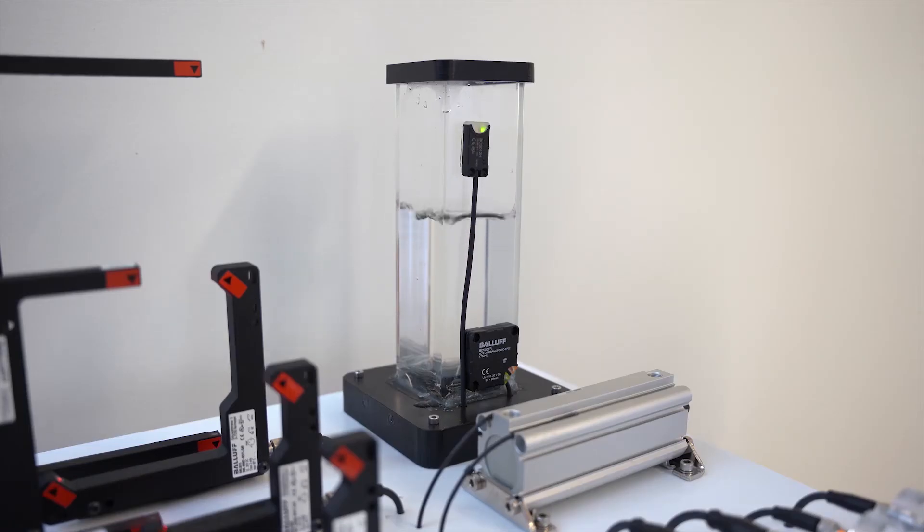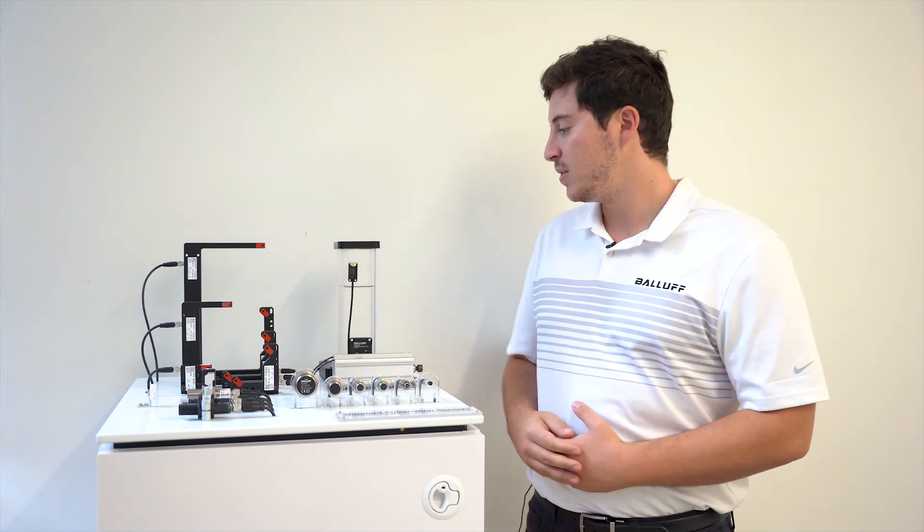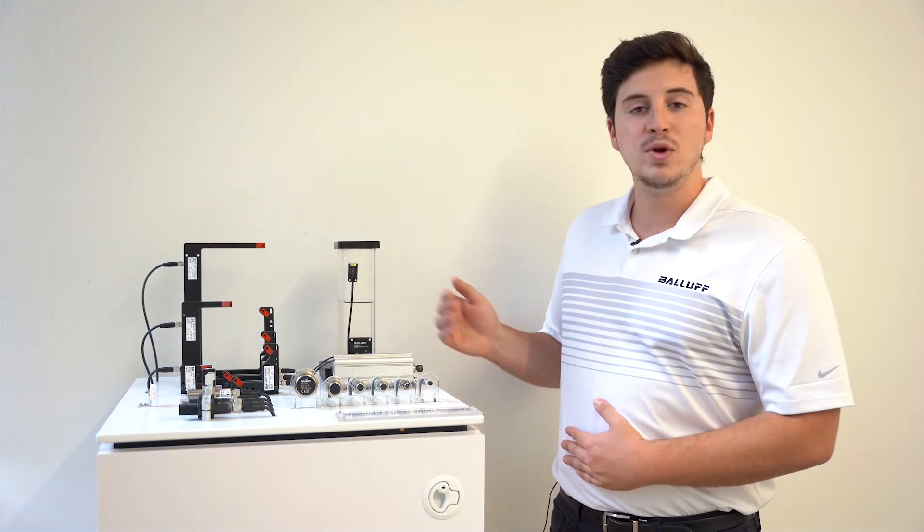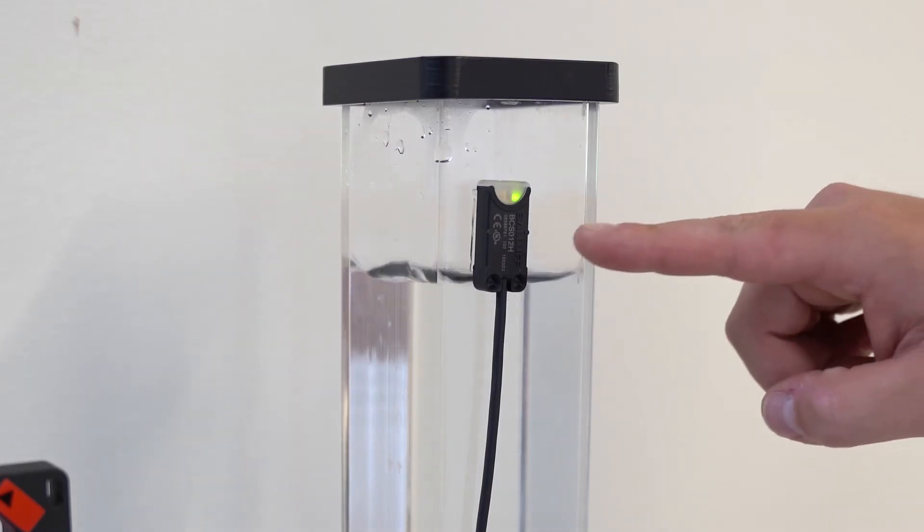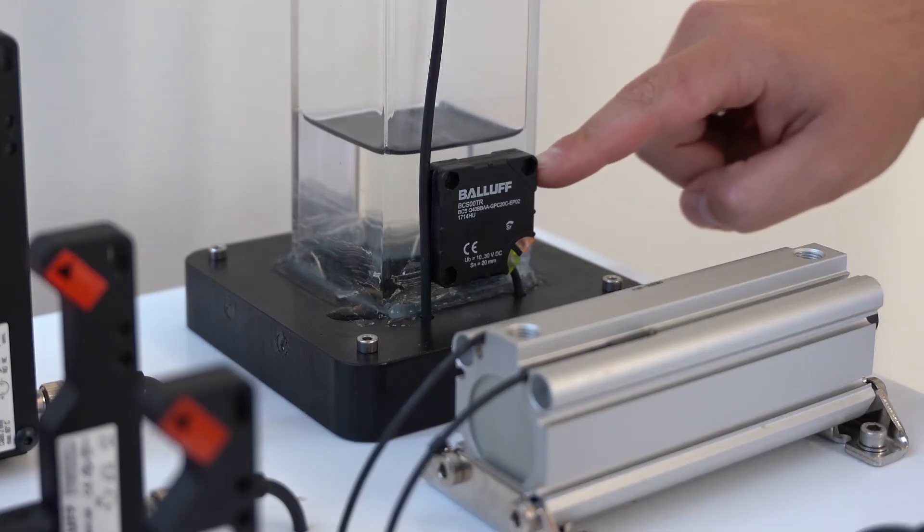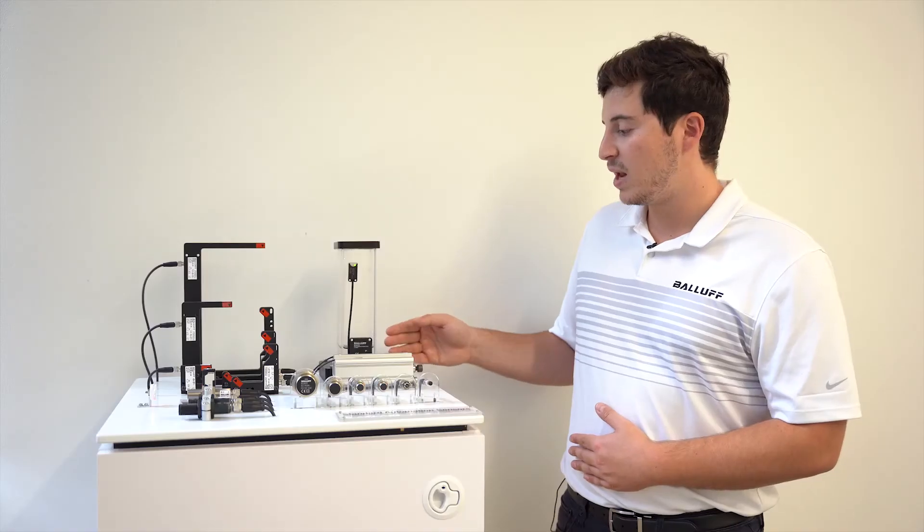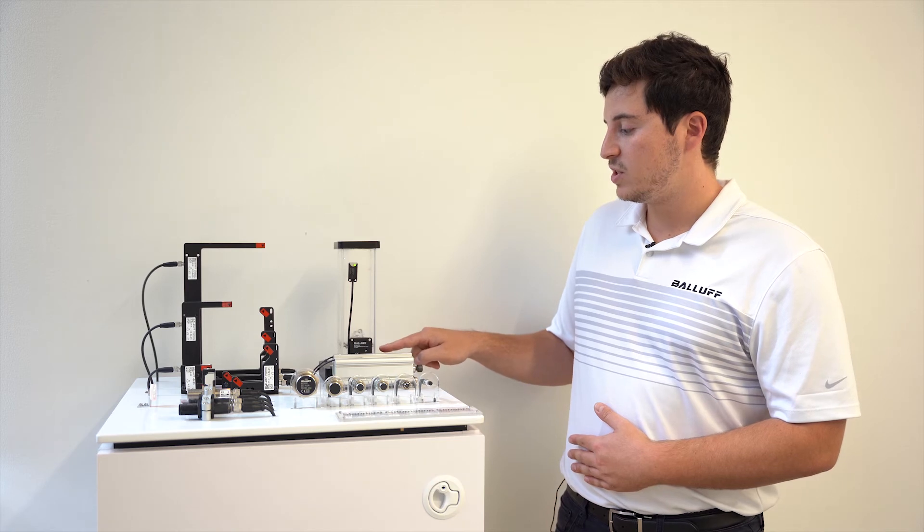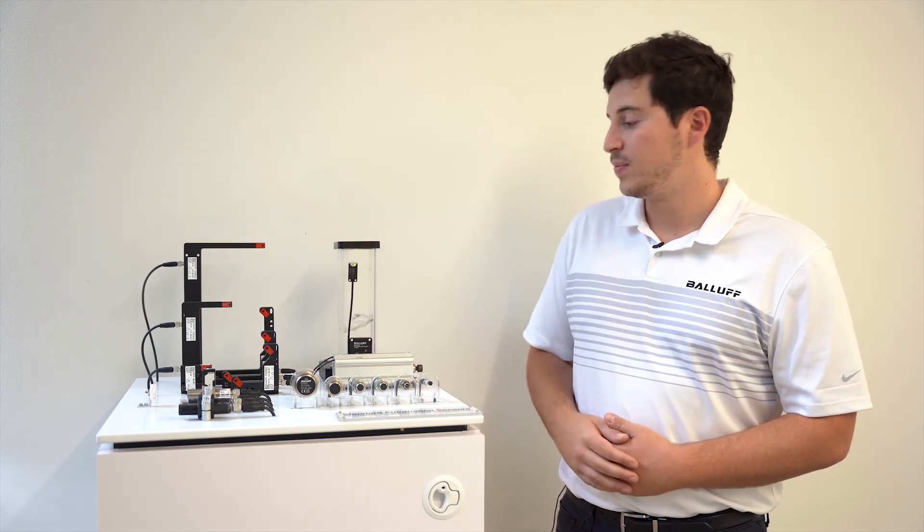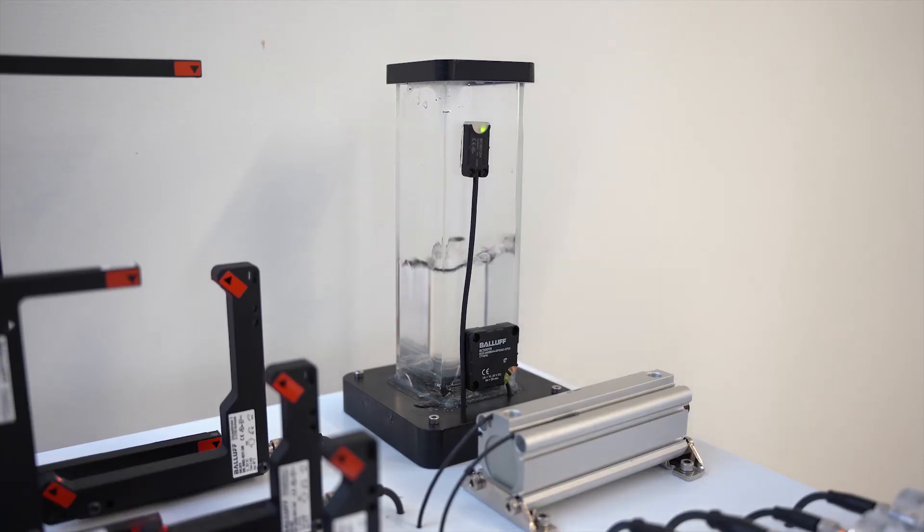Located on the back right here is our level detection demo, and this has two capacitive sensors located on the front, one on the top and one on the bottom. As you can see, as the water reaches the bottom, that sensor can actually see through that plastic tank, detect that water level, and then tell that pump to start filling it up. Same goes for the top. As it reaches the top, it will tell that pump to start draining the water.